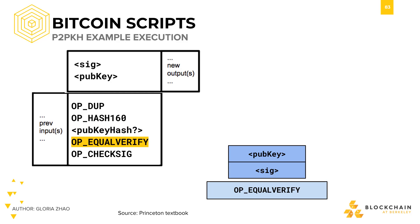OP_EQUALVERIFY then checks to see if the top two items on the stack are equal. If they are equal, we continue with execution. If not, then the transaction is invalid and we stop execution. In this case, let's say the transaction is valid, so we keep going with execution.